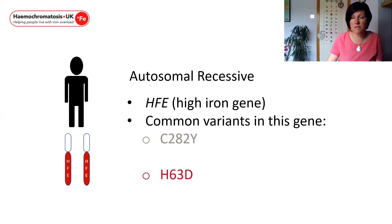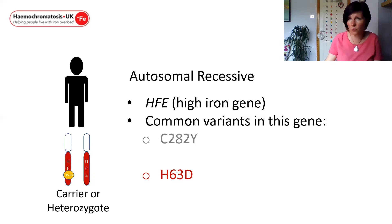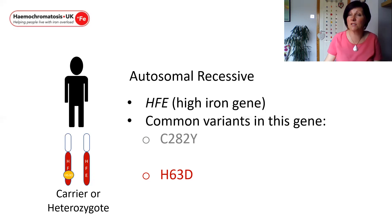Now let's think about H63D. H63D is a milder variant. For patients who have inherited just one copy of the variant, as shown on the slide, we would again refer to this as being a carrier. Because it's only a mild variant and because this patient has a second fully working copy, we really wouldn't expect this patient to develop any symptoms. If you are a carrier of H63D and do develop symptoms of iron overload, it's important that it's investigated, as there may be other separate genetic or environmental factors contributing.